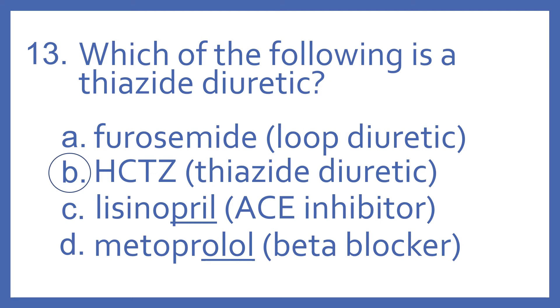Furosemide is a loop diuretic. Lisinopril is an ACE inhibitor, and you can know that with the '-pril' suffix. And metoprolol is a beta blocker, and you can know that with the '-lol' suffix.